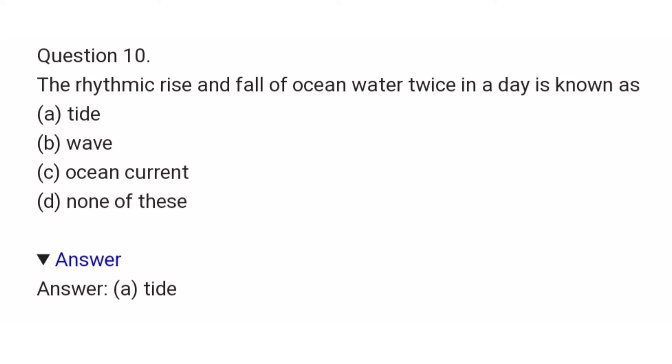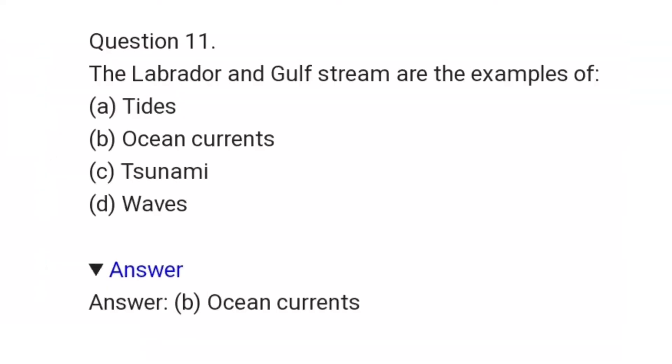The tenth question is the rhythmic rise and fall of ocean water twice a day is known as: tides, waves, ocean currents, or none of these. The answer is tides. The next question is the Labrador and Gulf Stream are examples of: tides, ocean currents, tsunami, or waves. The answer is ocean currents.